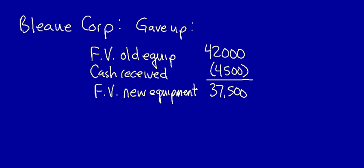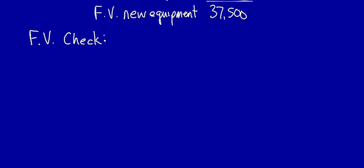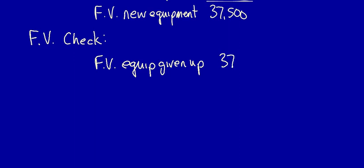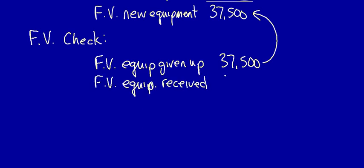What do we have to do next? A fair value check. We take the fair value of the equipment given up — we've just calculated that as $37,500, exactly the same as our calculation. Now we compare it to the fair value of the equipment received, which is also equal to $37,500. These are equal, so there is no fair value adjustment required.